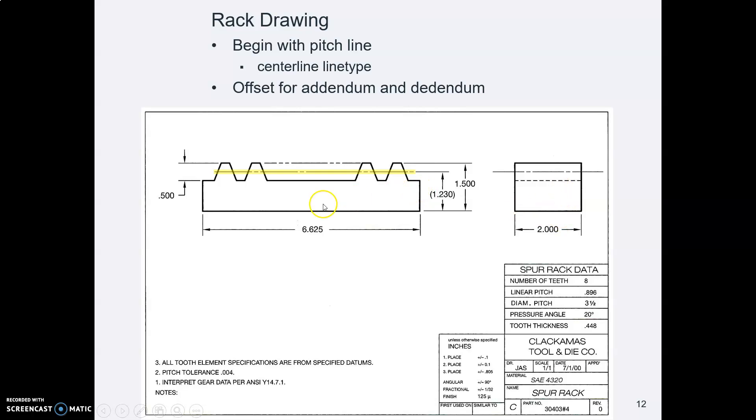So you'll start drawing the gear blank stuff, and again, this is that example out of our book. So the numbers are different than the numbers will be on your rack. So here's a rectangular view showing the end view. I think yours is one and a half wide. And you'll draw the pitch line with a center line, and then you'll offset up for the addendum, and down for the dedendum.